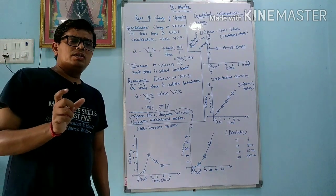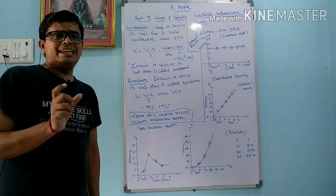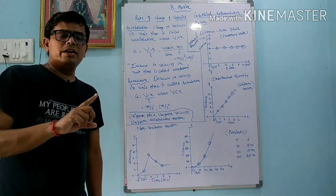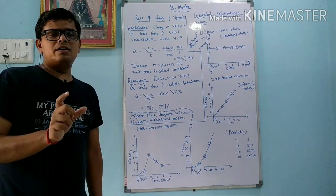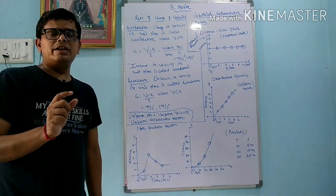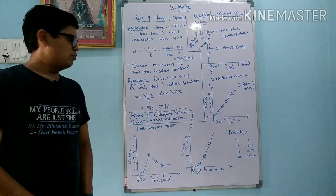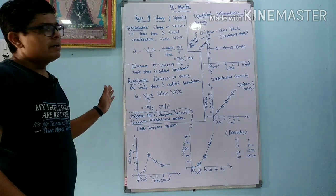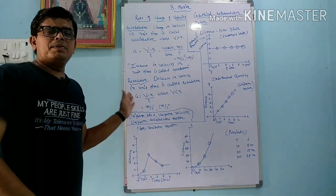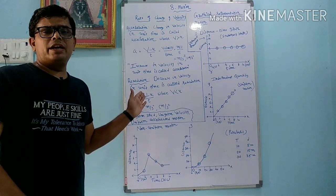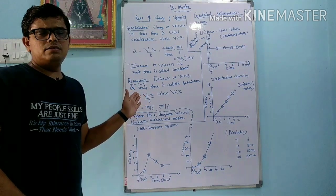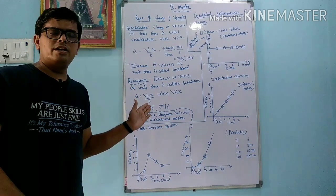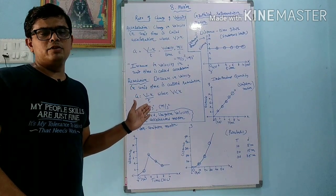In a vehicle you will see a speedometer, which indicates the speed, and an odometer, which indicates how much distance is covered by the object. When acceleration is represented by a negative sign, it is called retardation, and whenever we write about retardation there is no need to write the negative sign.